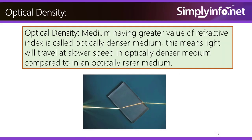Optical density. A medium having a greater value of refractive index is called an optically denser medium. This means light will travel at a slower speed in an optically denser medium compared to one in the optically rarer medium.